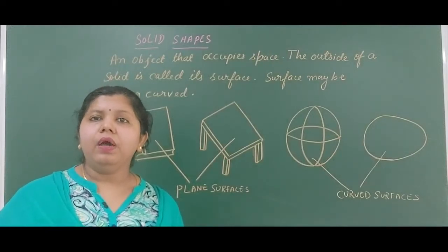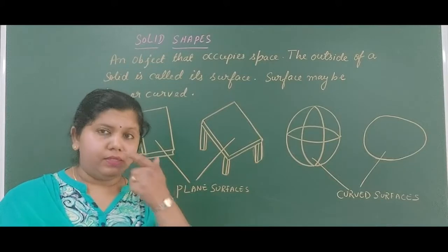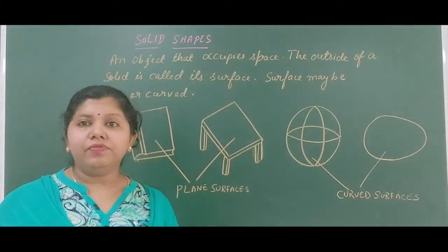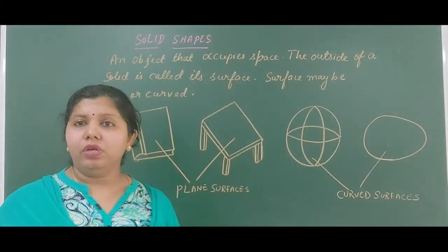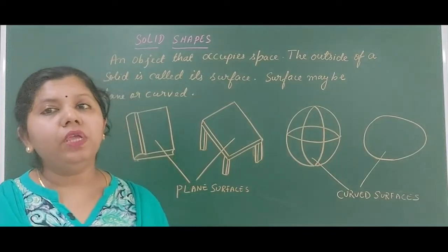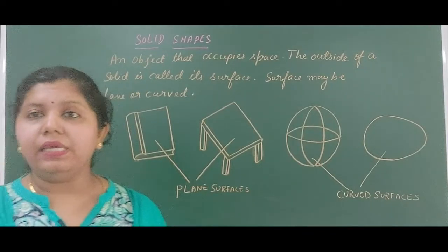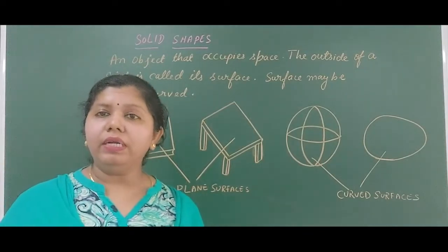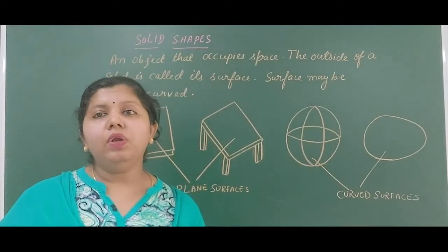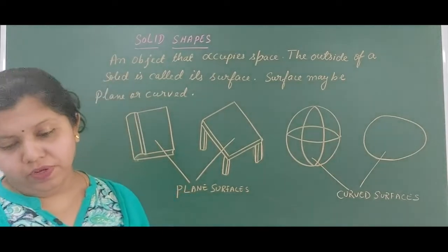Now there are surfaces. We will find some surfaces in the solid shape. What are the surfaces? The part of the object that you can actually see or you can touch — that particular part is called the surface.